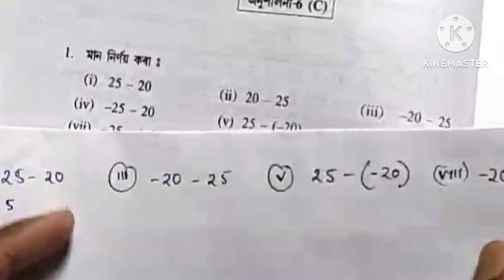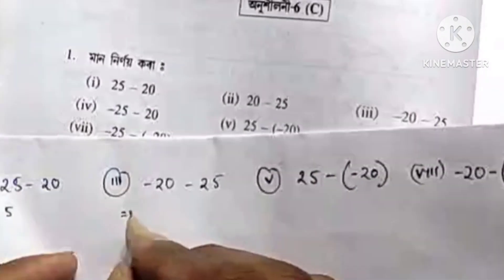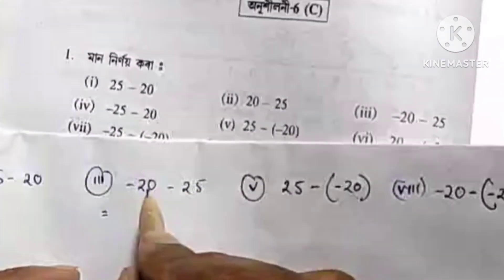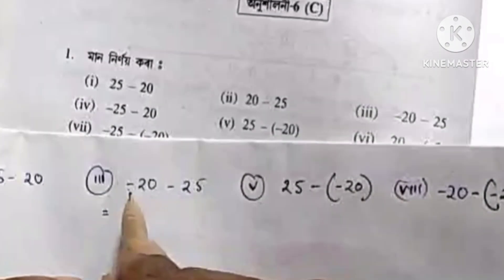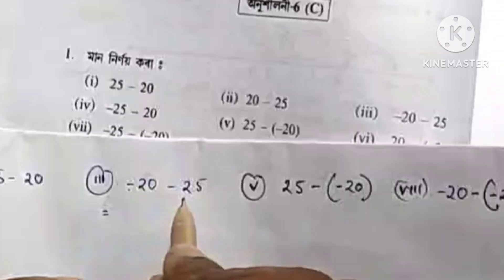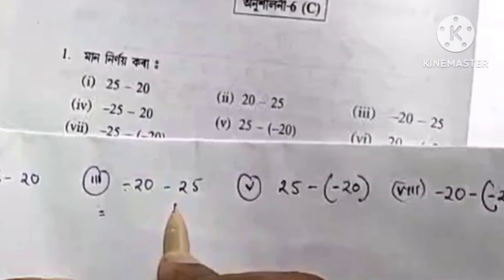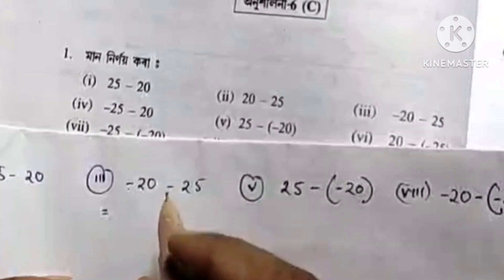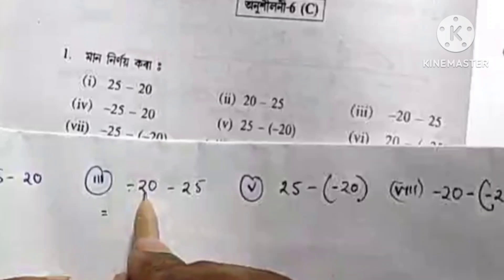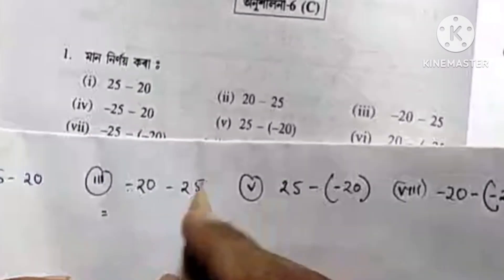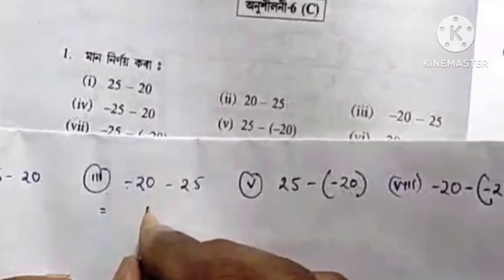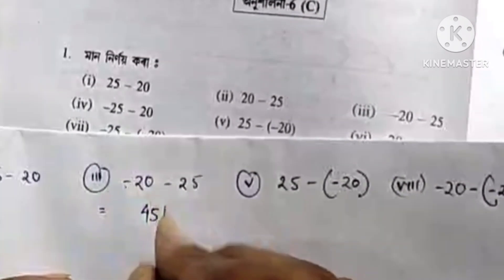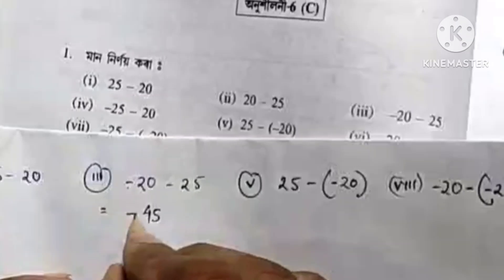So, number 2 has minus 20 and minus 25. The two signs are minus, so the bracket sin is minus. Therefore, cos becomes plus, and 20 plus 25 gives us 45. But sin 2 will be minus.